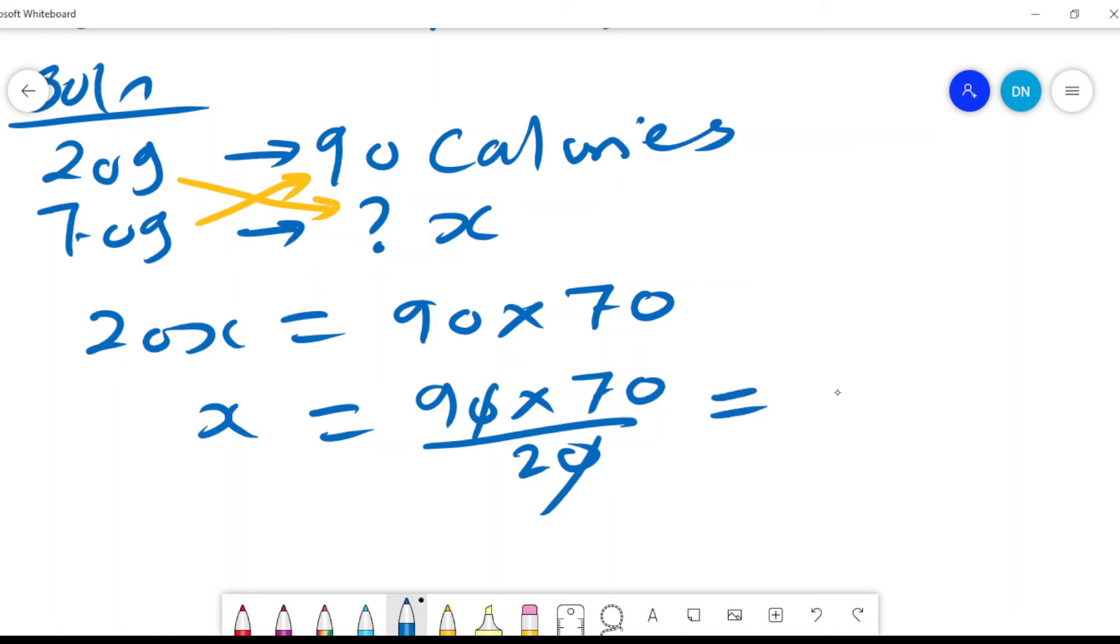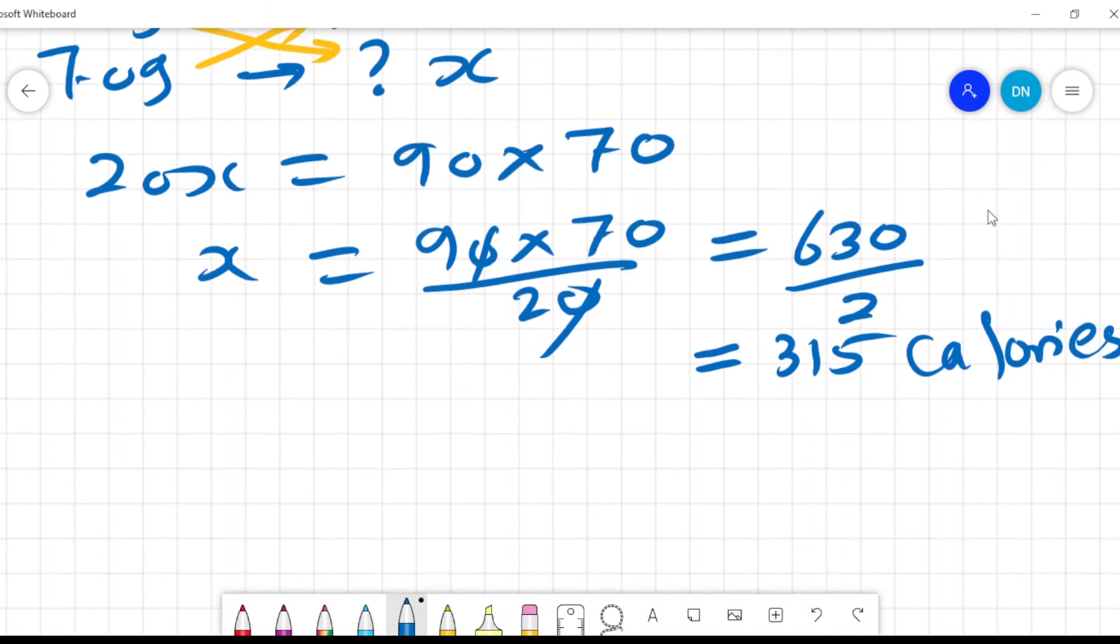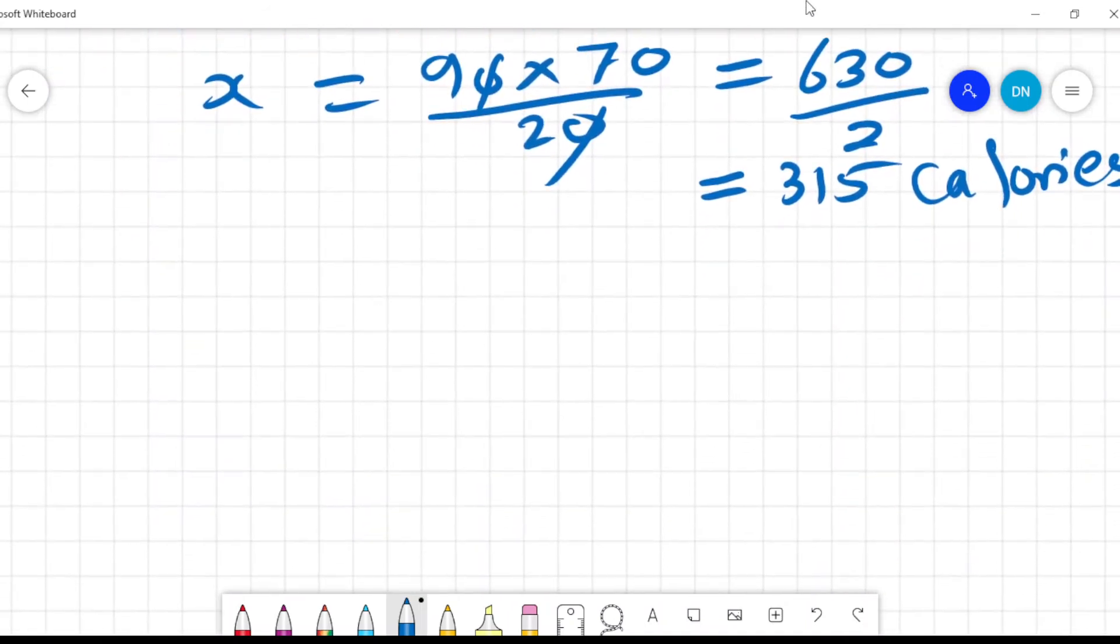And that gives me 630 divided by 2, and that will give us 315 calories. So that's how I'll be able to solve that problem in terms of the calories that are contained in the cheese.